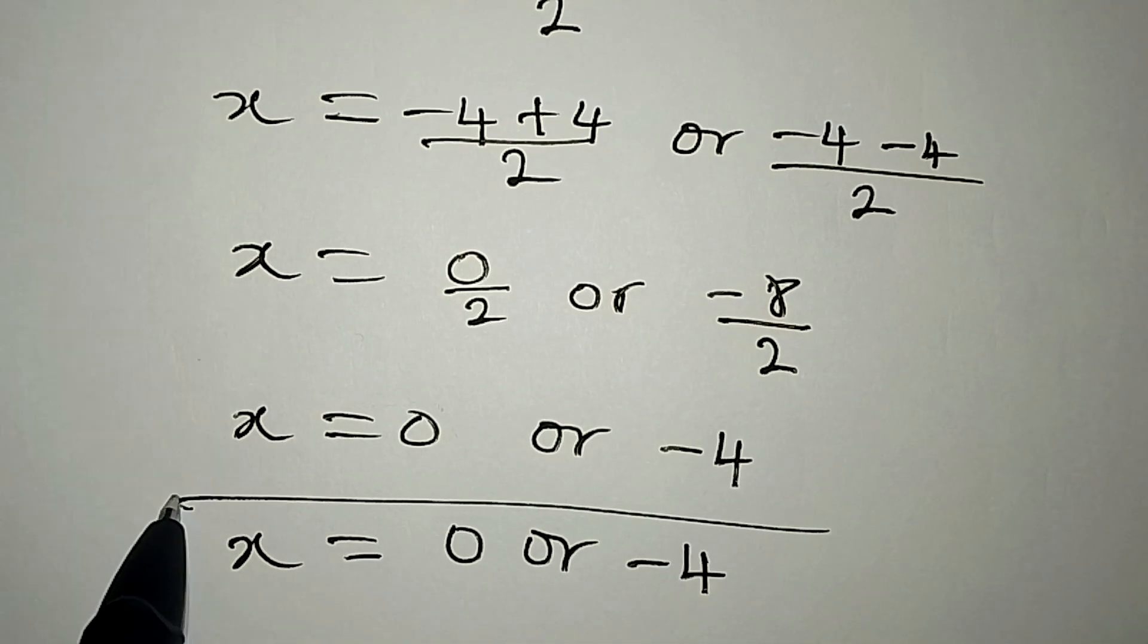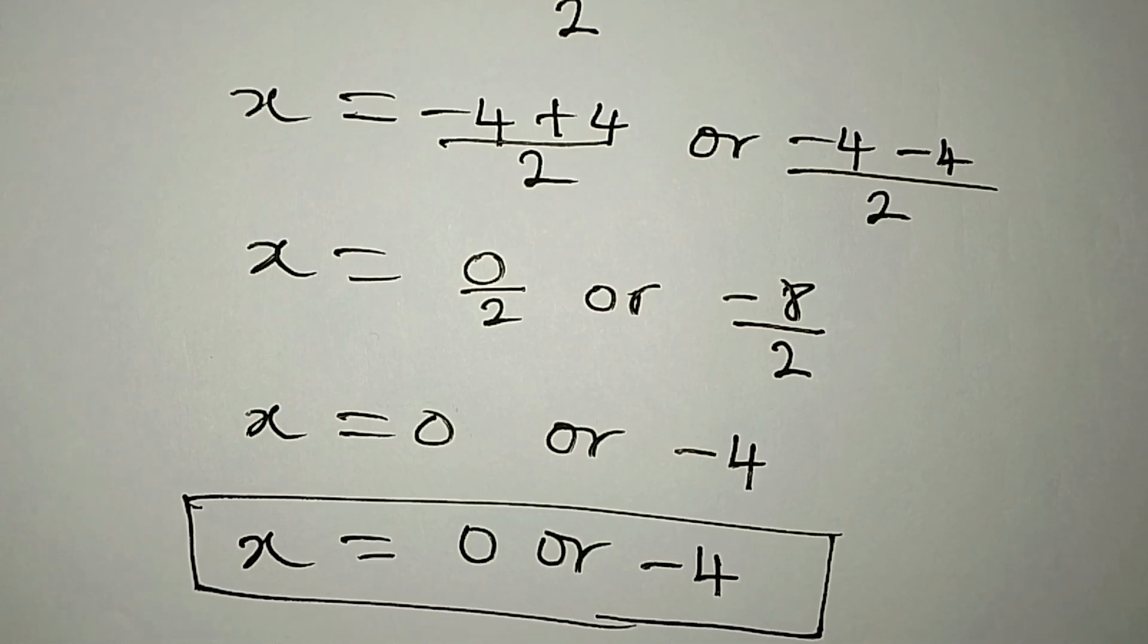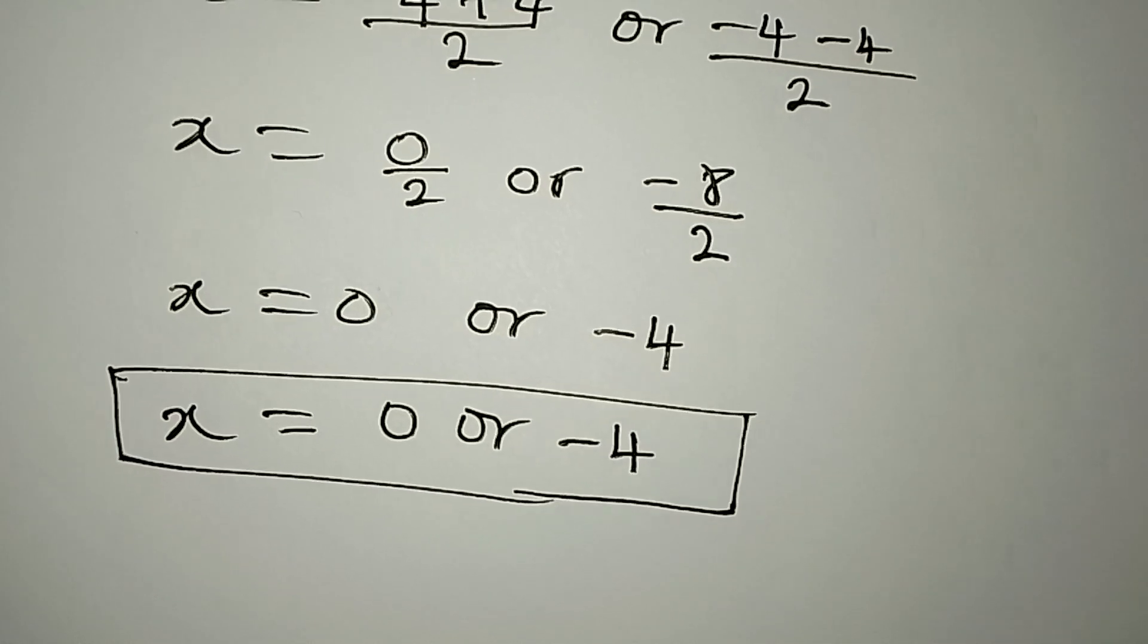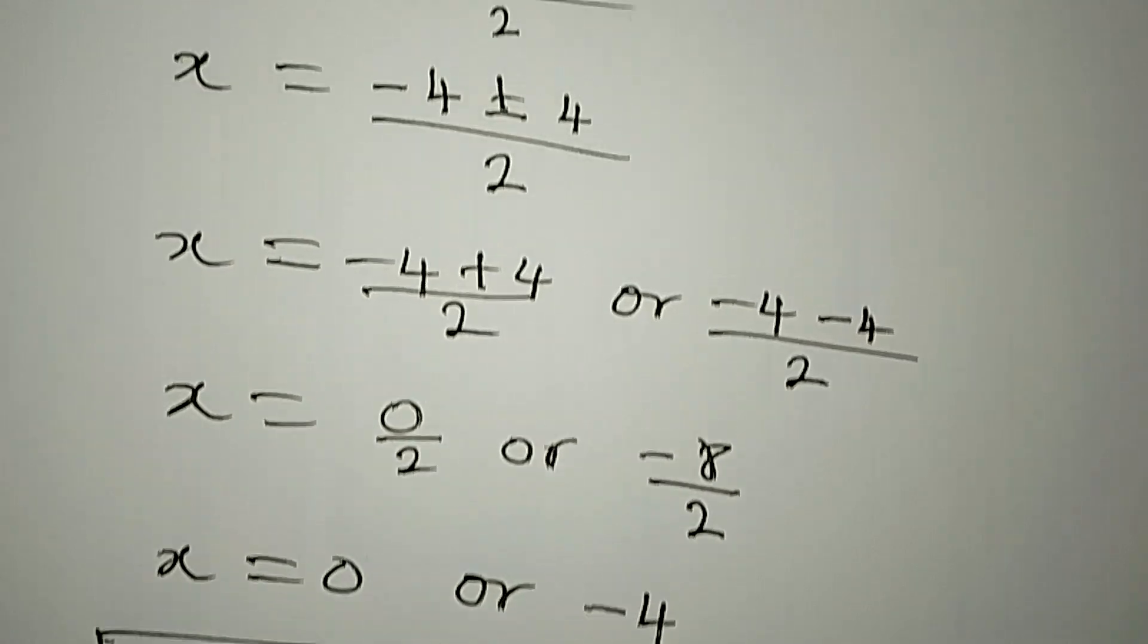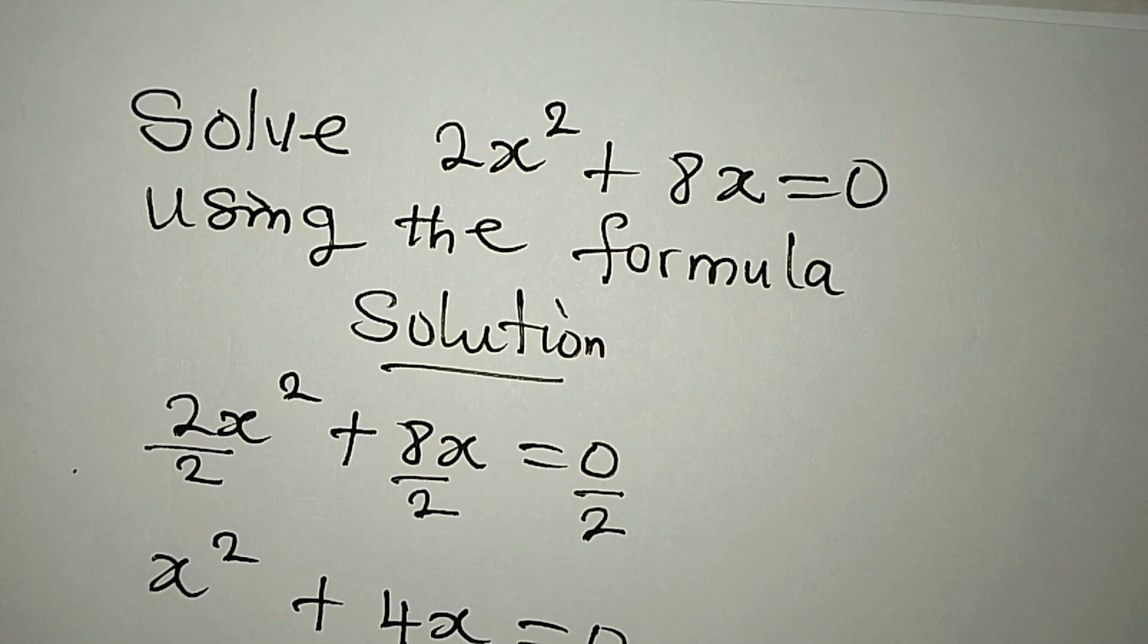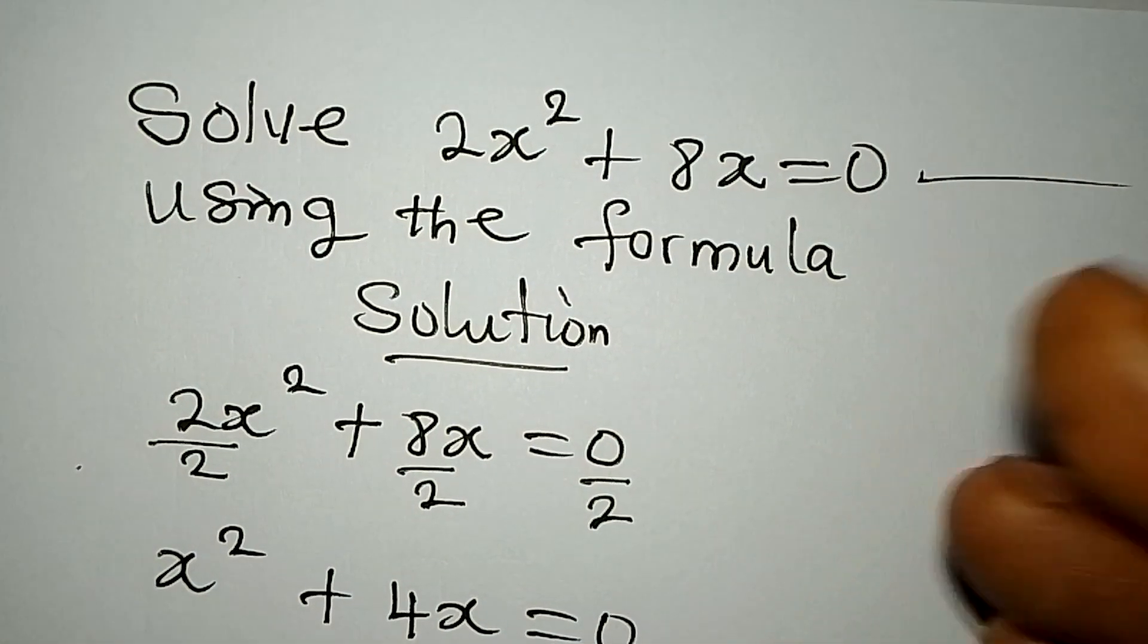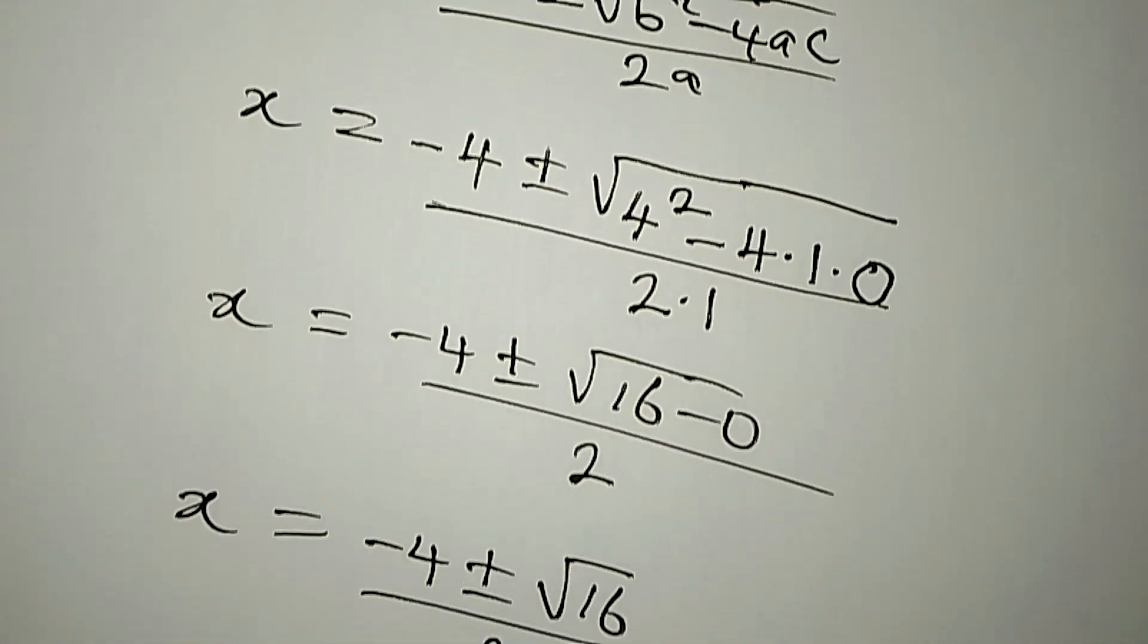So this will be the two values of x that would satisfy the given equation. And for the benefit of doubt, you can put these two values of x into the original equation, which is 2x² + 8x = 0. You can put it in and see if you're going to have 0 on the right-hand side. If you do, then give me a thumbs up. If you have not given me, thank you, God bless.